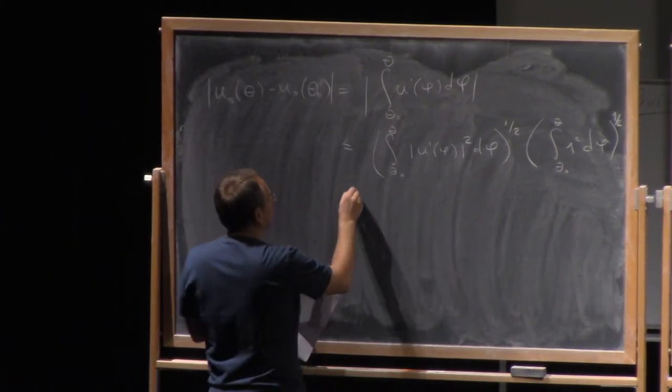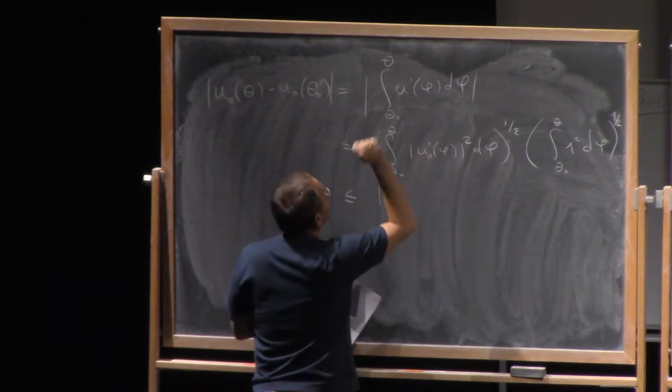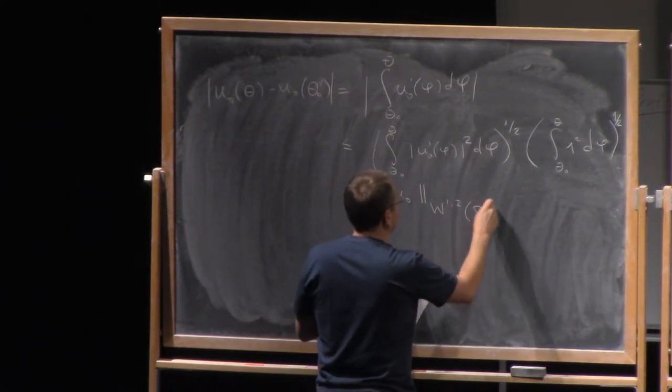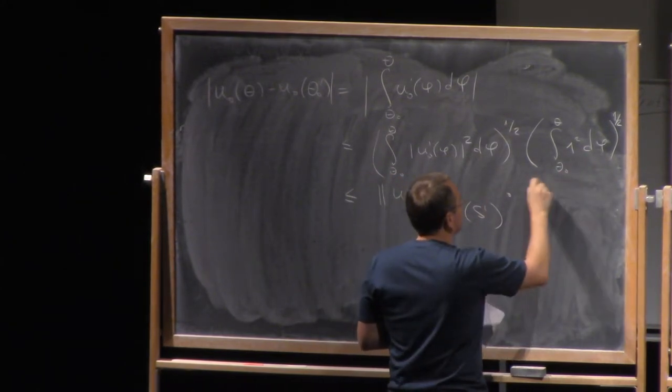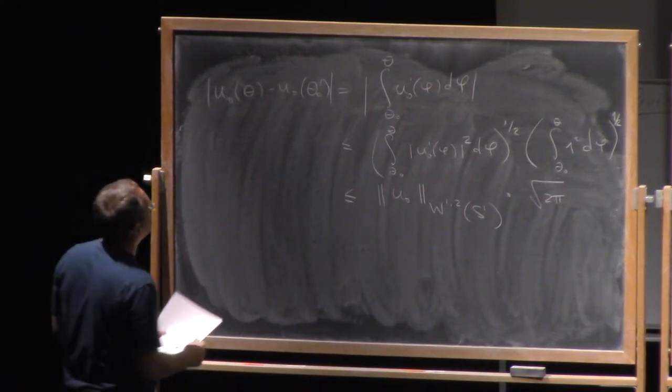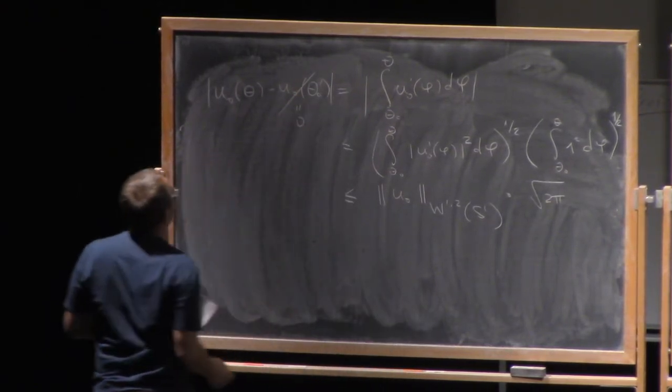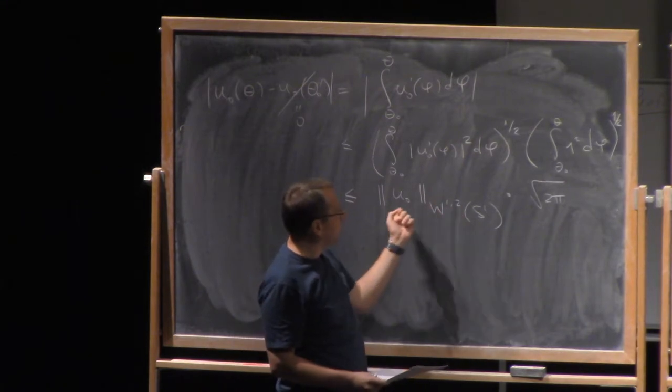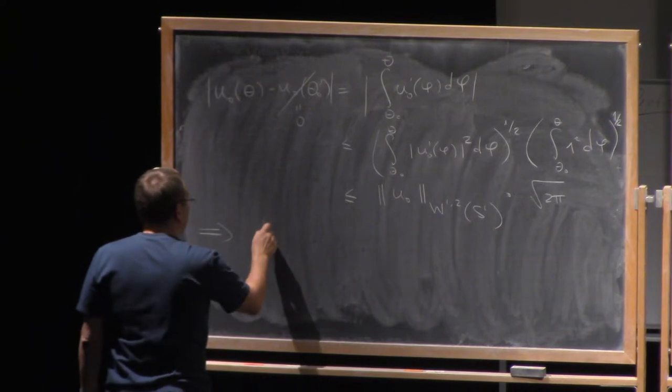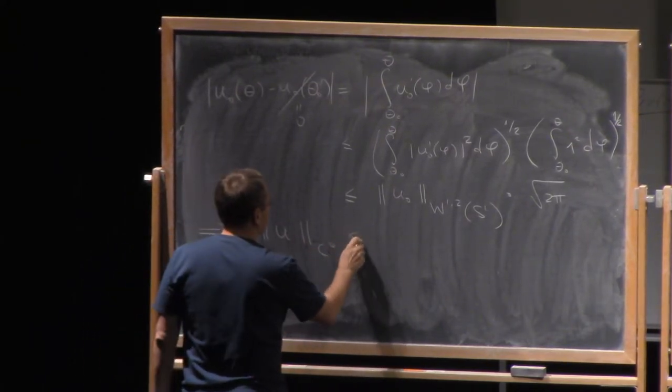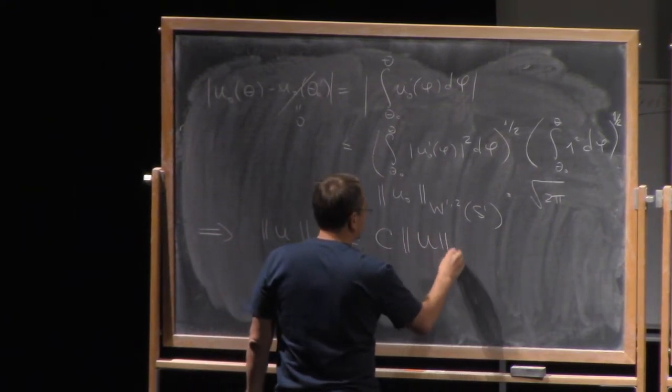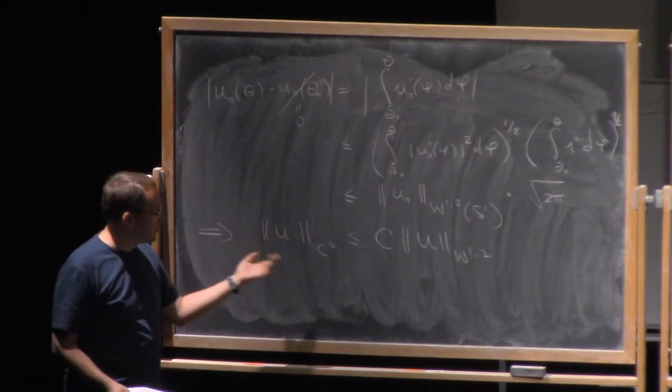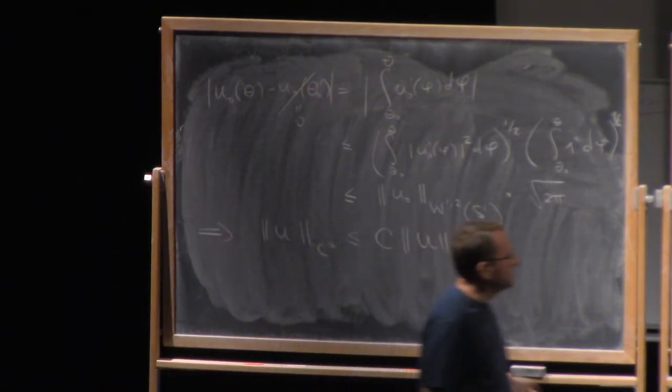Now, this clearly can be estimated further as a norm of, this is all u₀, as a norm of u₀ in W^{1,2} of S¹ times, so this is no greater than the length of the circle, so this is square root of 2π. Now, this is zero, and what we have, we have the bound on the C⁰ norm of u₀ in terms of the W^{1,2} norm of u₀. Right, and it's not hard from this to conclude that the norm of u in C⁰ is, in fact, bounded by a constant times norm of u in W^{1,2}. So I assumed here that u was a smooth function, but now, by extension, we have this inequality for all functions in W^{1,2}. And this is precisely one of the embedding theorems that I had on the blackboard.